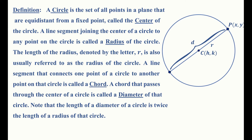Formally speaking, a circle is the set of all points in a plane that are equidistant — this word just means they have the same distance — from a fixed point, which we call the center of the circle. A line segment joining the center to any point on the circle is called a radius. Even though the radius is a segment, we also refer to the length of the radius simply as the radius.